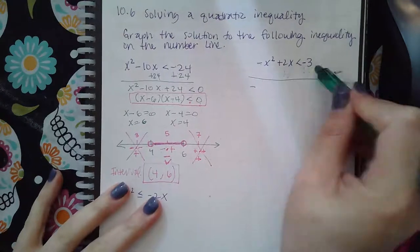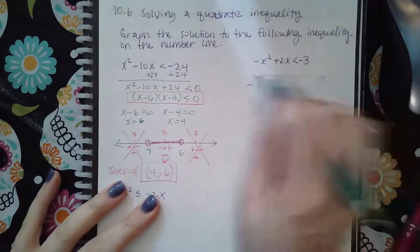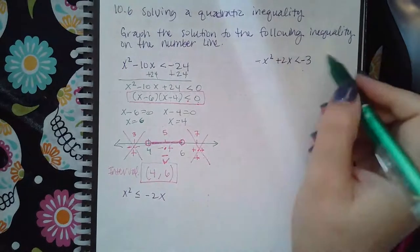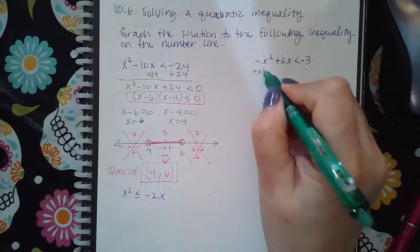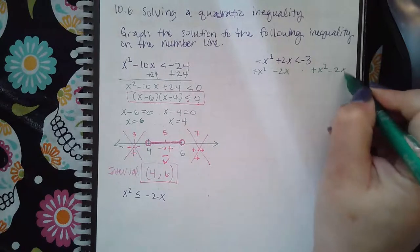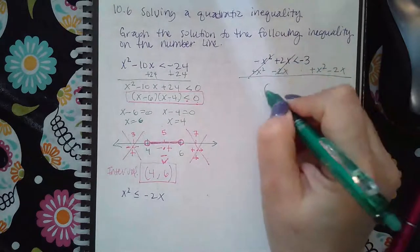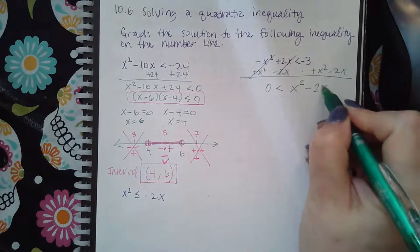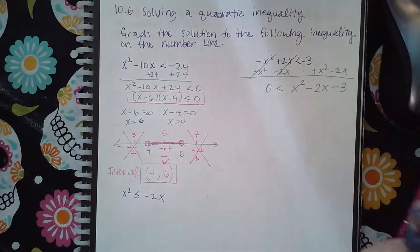I would much rather move the negative x squared over so it becomes positive. So then I'm going to have a positive x squared and a negative 2x. Positive x squared, negative 2x. So I get zero. None of these are like terms, so I'm going to put the positive x squared in the front, negative 2x next, and then the negative 3 last.